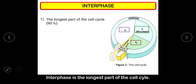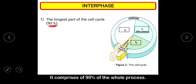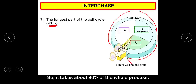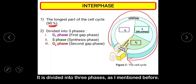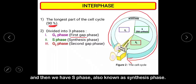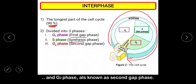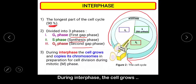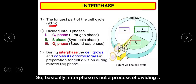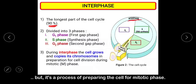Interphase is the longest part of the cell cycle, comprising about 90% of the whole process. From the diagram, you can see interphase begins at the start and almost finishes the cycle. It is divided into three phases: G1, also called the first gap phase; S phase, also known as synthesis phase; and G2, also known as the second gap phase. During interphase, the cell grows and copies its chromosomes in preparation for cell division. Interphase is not a process of dividing but a process of preparing the cell for mitotic phase.